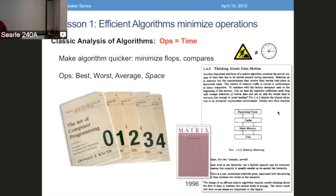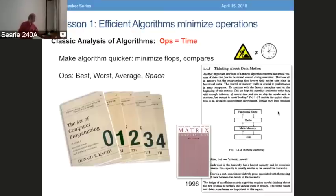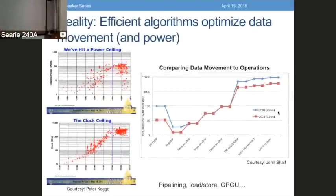Slowly — this latest version from 1996, there's a newer version out — people are starting to realize that it's not quite like that. Operations is not quite equal to time. In the reality we have today, we've hit a power ceiling on how much power we put into a socket, and the clock has pretty much leveled off. So the real issue is data movement. Data movement is the power-hungry piece that is driving all of efficiency inside algorithms, inside chips.